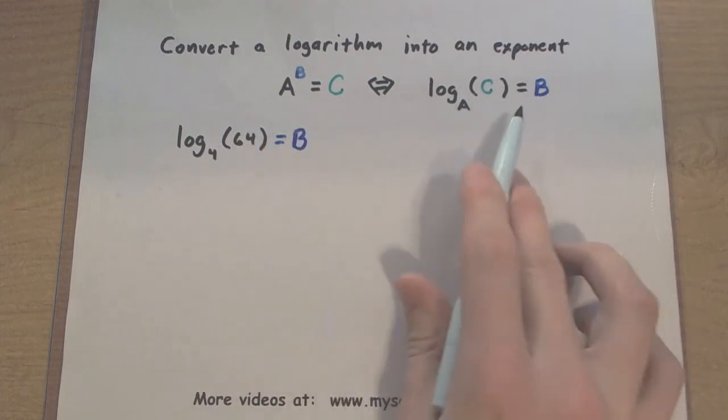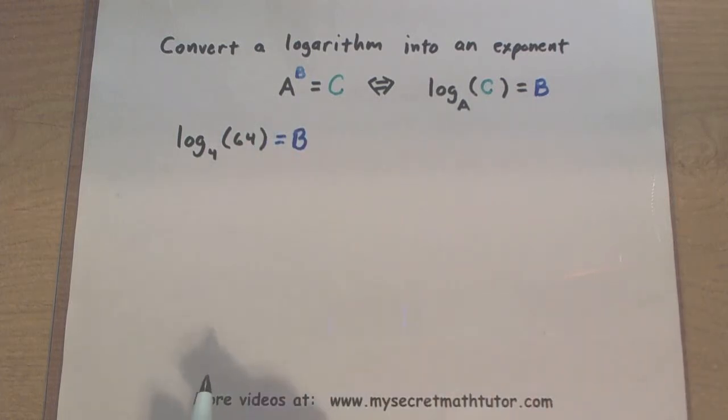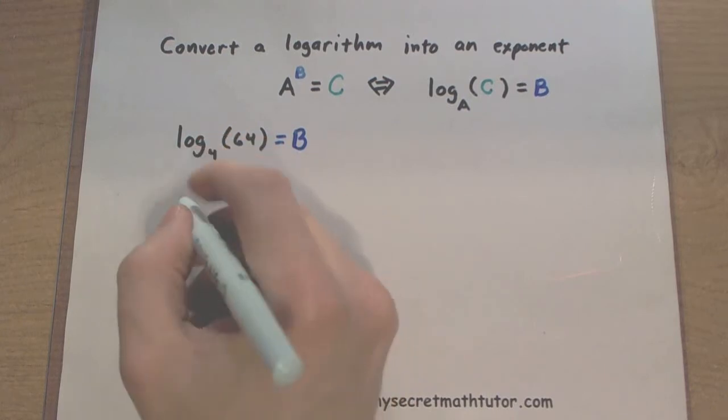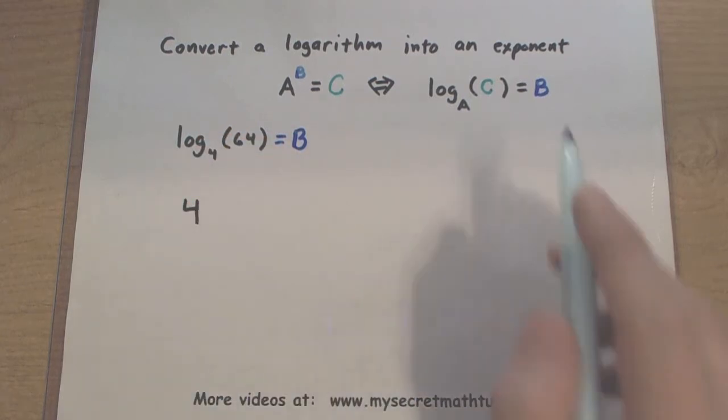According to this conversion formula, the base and the logarithm will end up as the base of my exponents. So let's see. I have a base of 4. Let's start off with a base of 4.